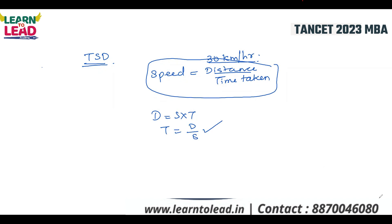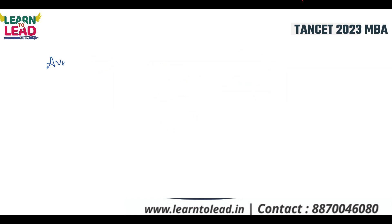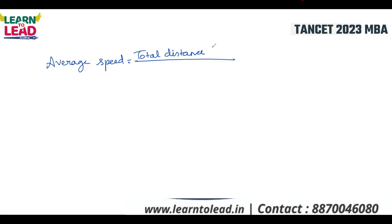Now for average speed: average speed is equal to total distance traveled divided by total time taken.